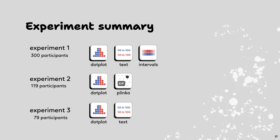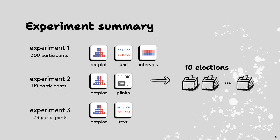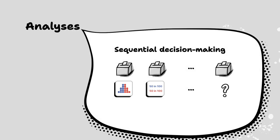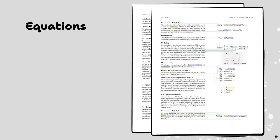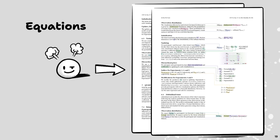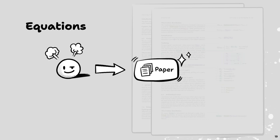We conducted three experiments to gradually refine our results. Each experiment contains 10 elections and is essentially a sequential decision-making process. We model this by assuming people maintain a latent trust variable across all visualizations, updated according to what people selected. These sequential decision-making models were presented as two pages of equations in the paper — I'm very proud of those two pages and encourage you to check out the paper.